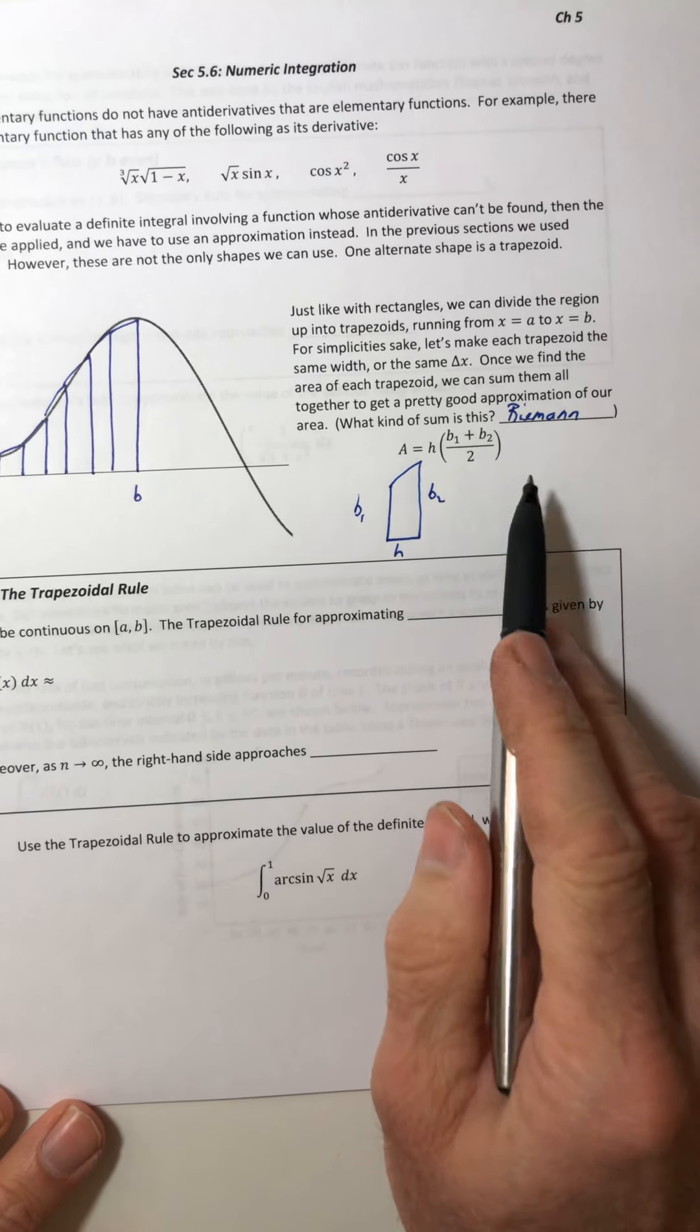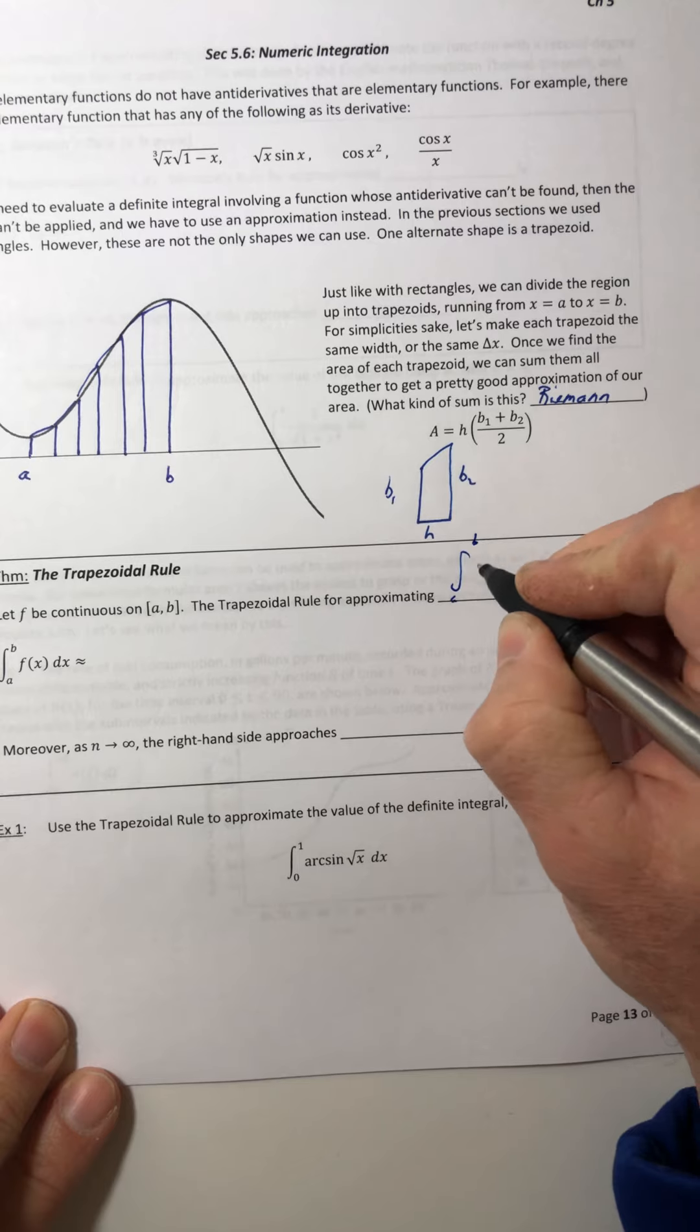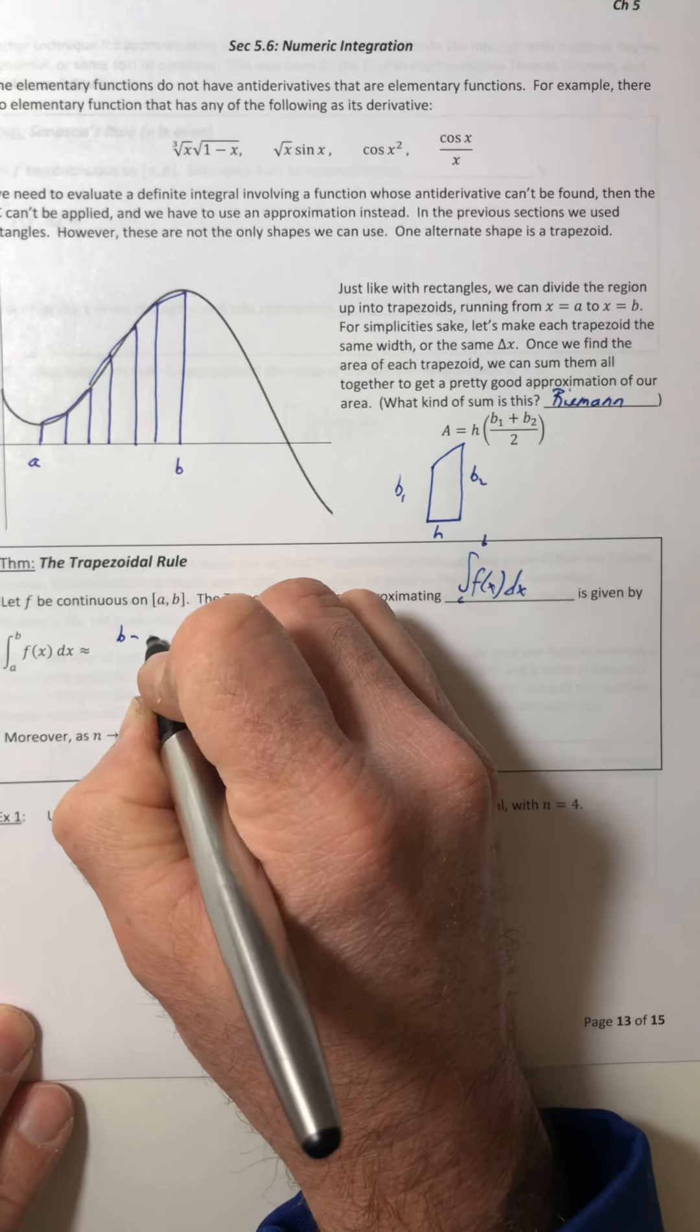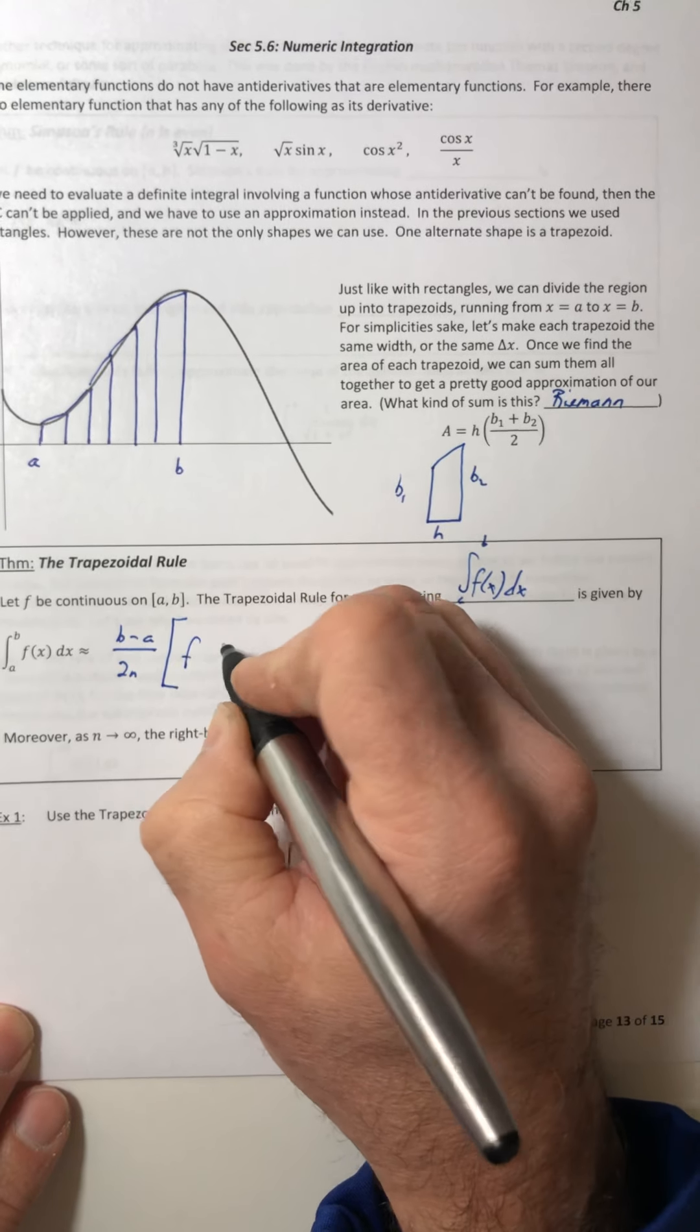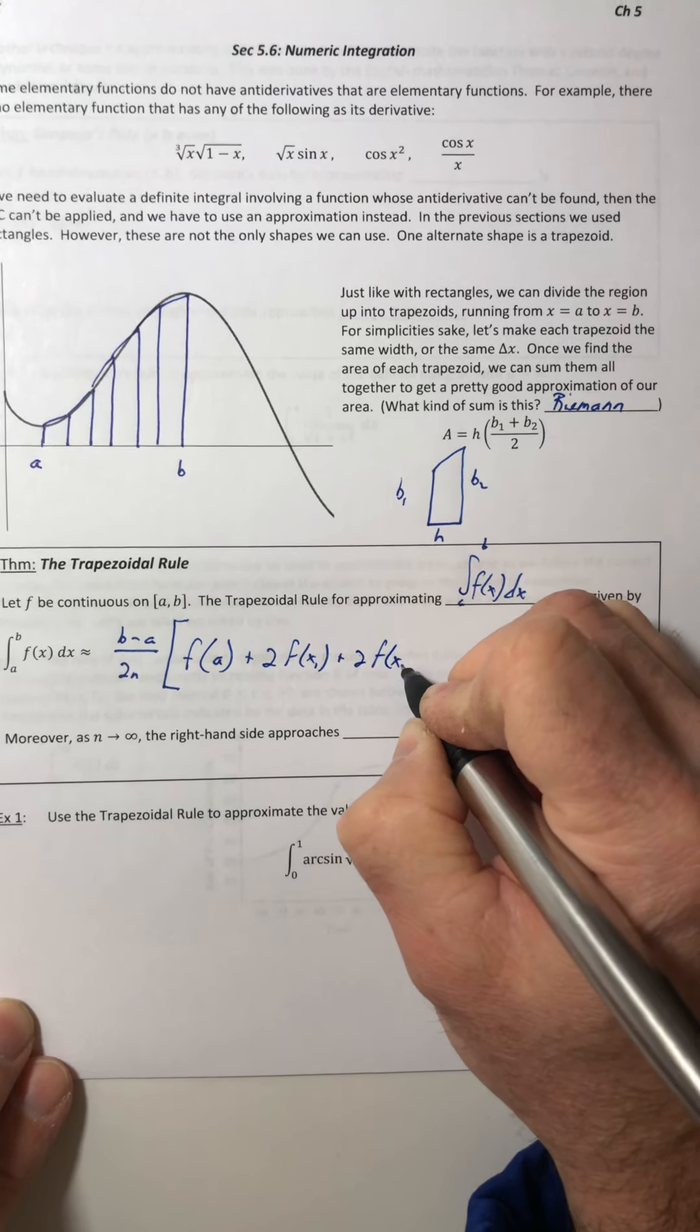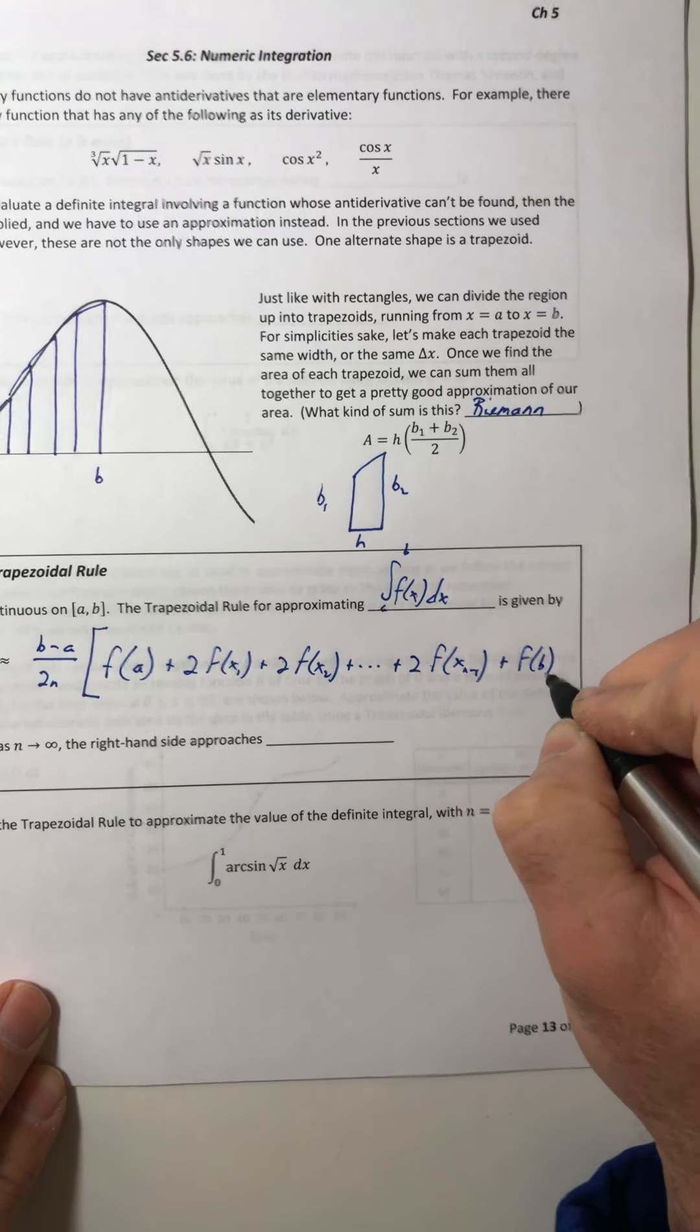So just keep that in mind when you start using this. Okay, so the trapezoidal rule. Let f be continuous. The trapezoidal rule for approximating the definite integral from a to b of f of x dx is given by, and remember this is approximating so it's got the approximation symbol not equals, so it's approximately equal to b minus a over 2n. And then inside of here is a big quantity, so we have f of a plus two times f of x sub one plus two times f of x sub two and then it keeps going, so and then finally plus two times f of x sub n minus one and then f of b.